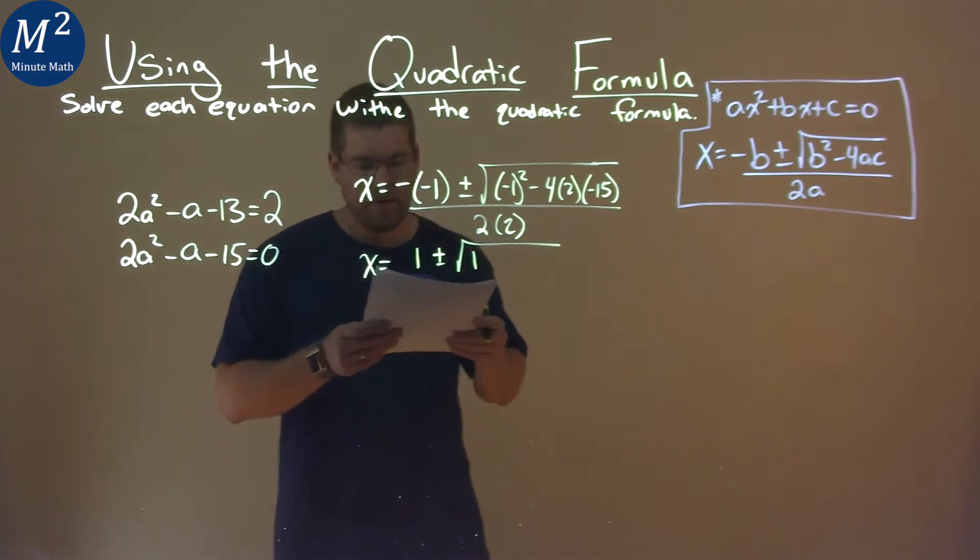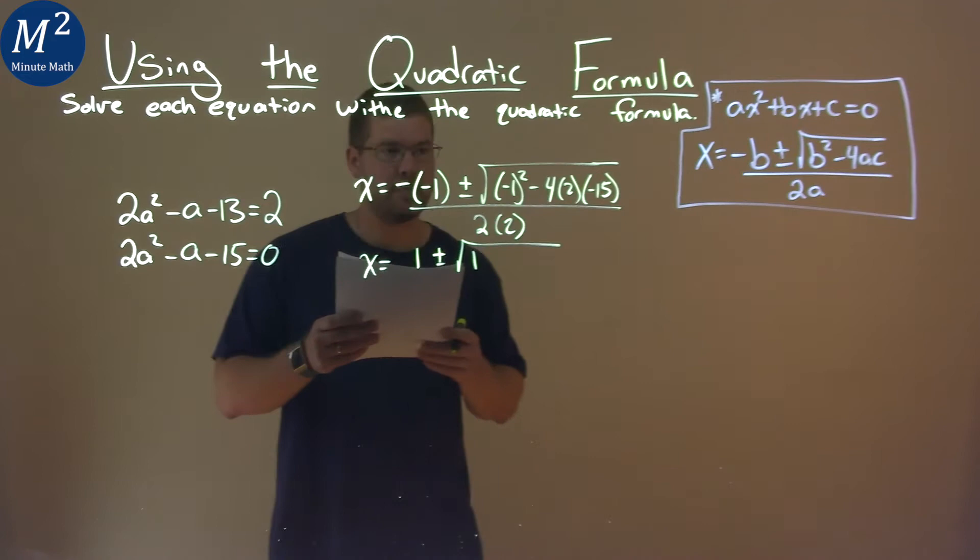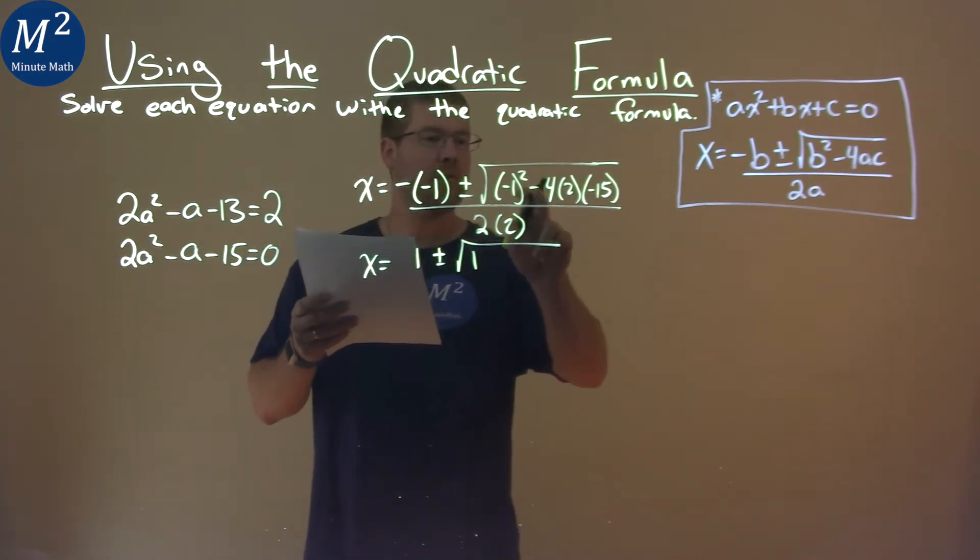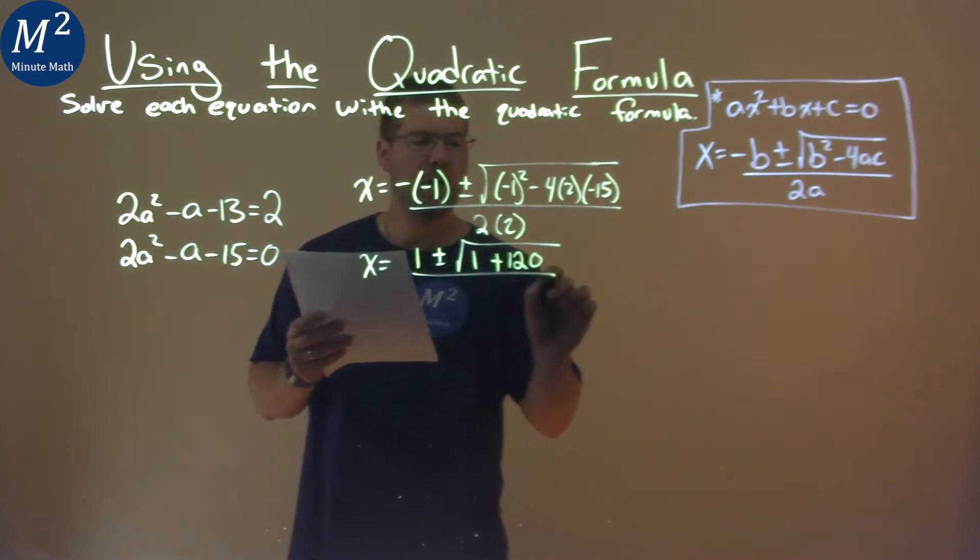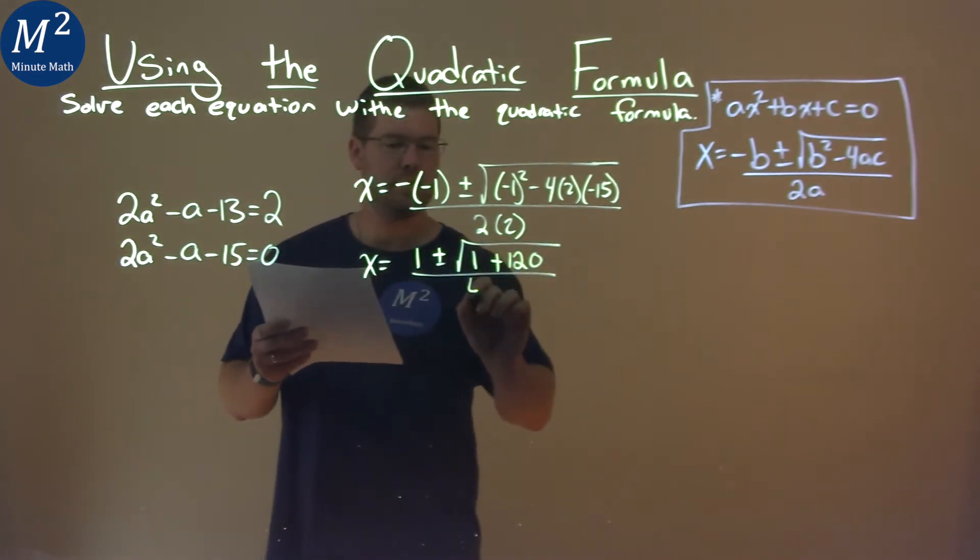4 times 2 times negative 15 is negative 120, but don't forget the double negative, so it's positive 120, all over 2 times 2, which is 4.